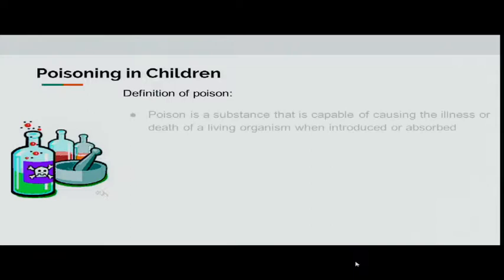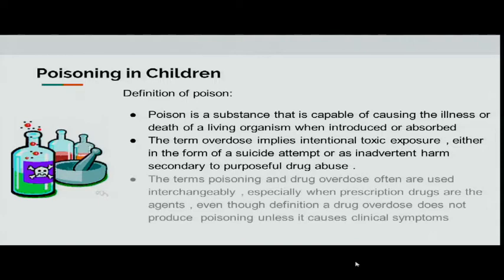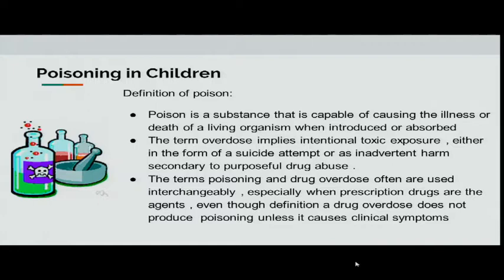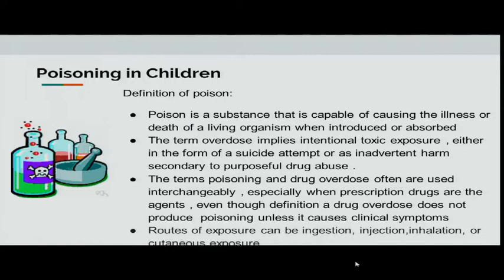So what is poison? It's a substance capable of causing illness or death of a living organism when introduced or absorbed. The term overdose is sometimes used interchangeably with poisoning, but overdose implies intentional toxic exposure — either a suicide attempt or harm secondary to purposeful drug abuse. The routes of exposure can be ingestion, injection, inhalation, or cutaneous exposure.